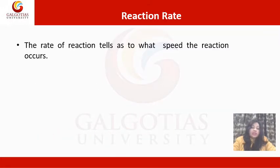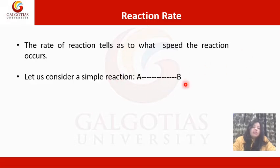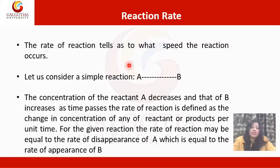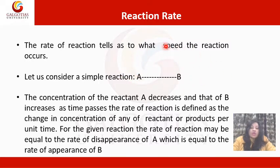Reaction rate. The rate of reaction tells us at what speed the reaction occurs. Let us consider a simple reaction: A converts into B. The concentration of the reactant A decreases and that of B increases as time passes. The rate of reaction is defined as the change in concentration of any reactant or product per unit time. For a given reaction, the rate of reaction may be equal to the rate of disappearance of A, which is equal to the rate of appearance of B.